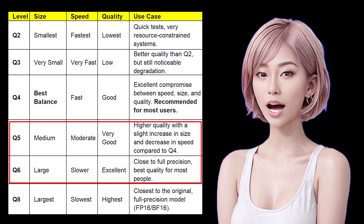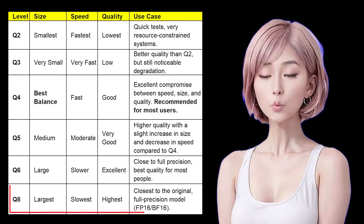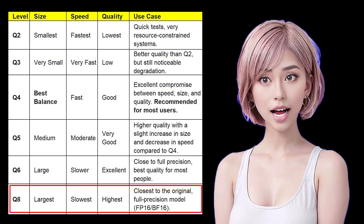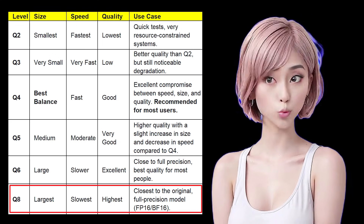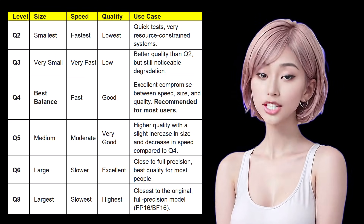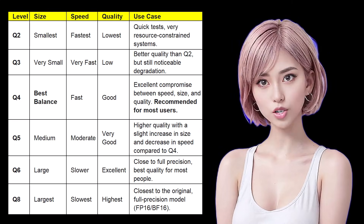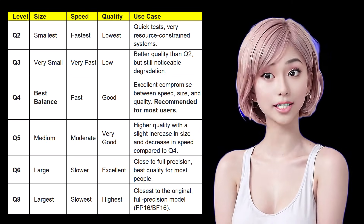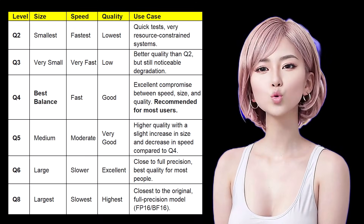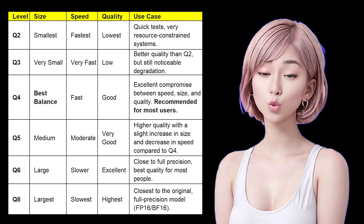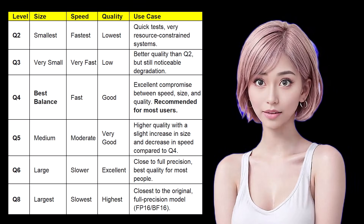Q5 and Q6: larger size for higher quality and slightly slower generation. Q8: largest size with highest quality, closest to the original full-precision model. The general rule is: higher Q number equals larger size, slower speed, higher quality. When in doubt, use Q4 — it's the lowest you should go before sacrificing too much quality.